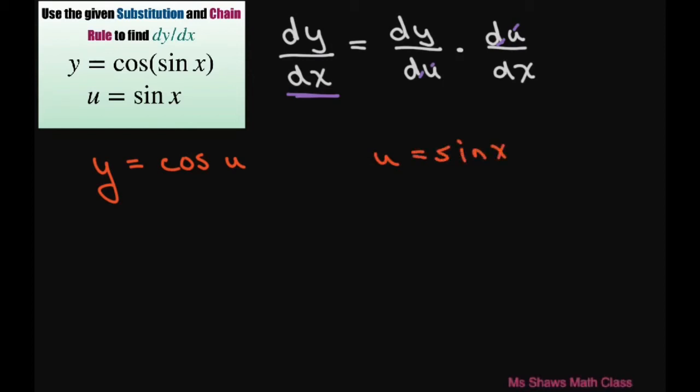Therefore, derivative of y with respect to u, we're doing this piece here, equals negative sine of u. And for this piece, derivative of u with respect to x equals cosine of x.